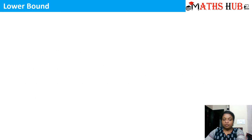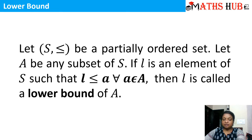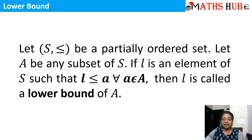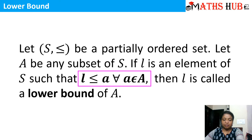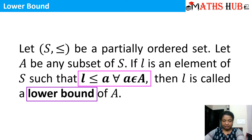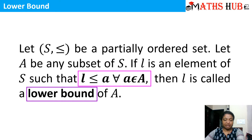Similarly, what is a lower bound? A lower bound is: if (S, ≤) is a partially ordered set and A is any subset of S, then if l is an element of S such that l ≤ a for all a belonging to A, then l is called the lower bound of A. All these definitions are very similar.